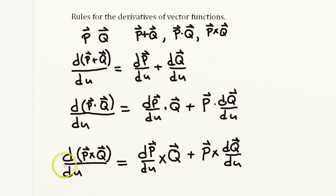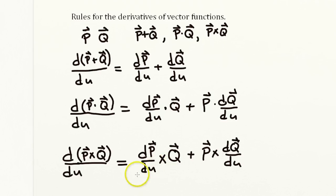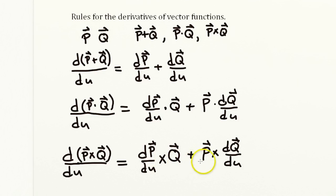And finally, if you need to take the derivative of a cross product of two vectors, you must maintain the order. Take the derivative of the first vector crossed with the second vector, plus the first vector crossed with the derivative of the second vector.